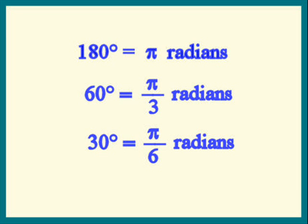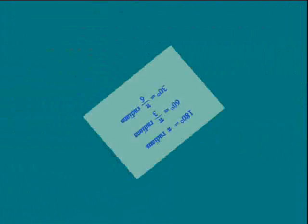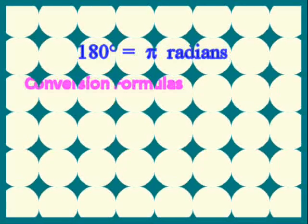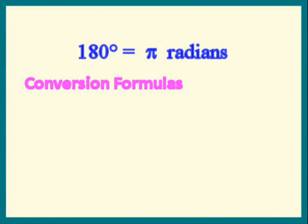When the angles aren't that special, we'll need to use conversion formulas. Divide each side by 180. We get 1 degree is pi over 180 radians.